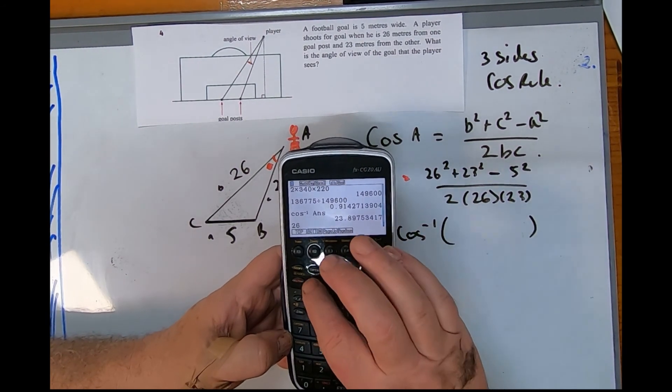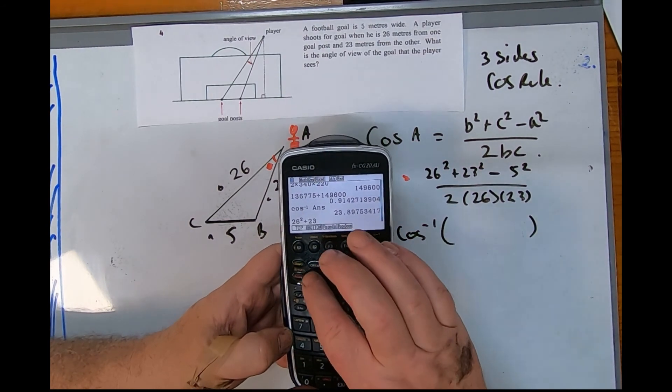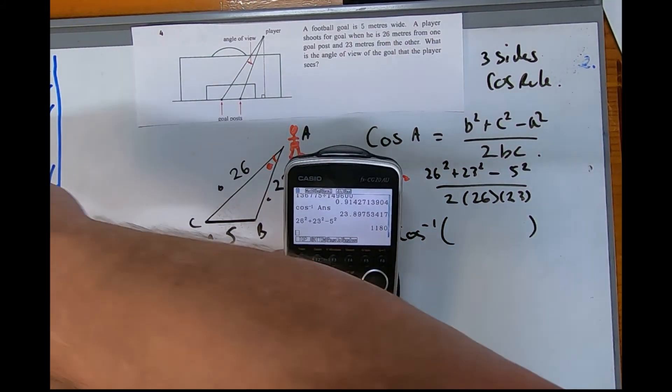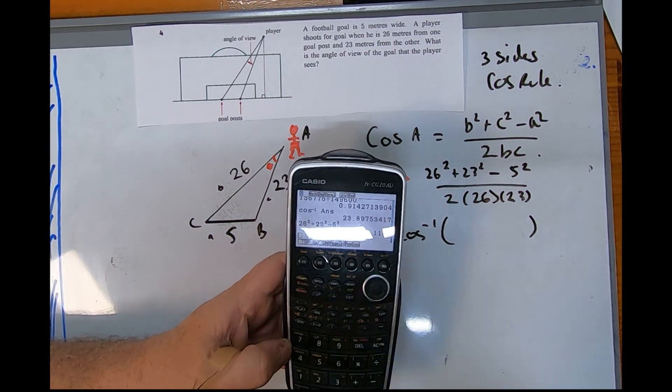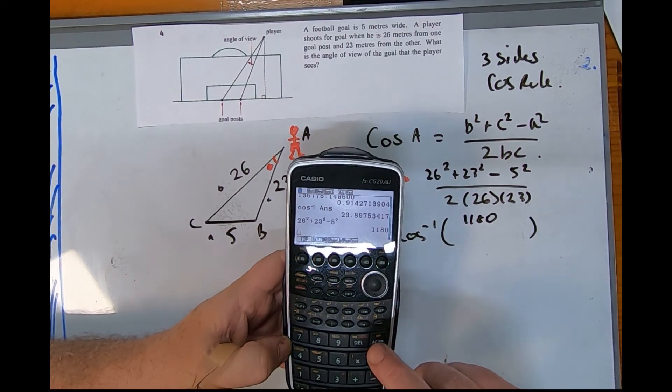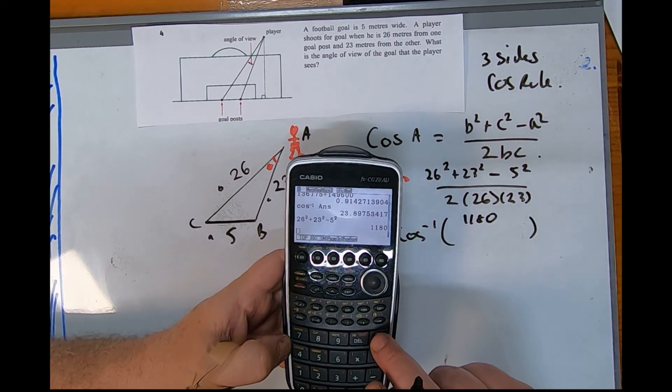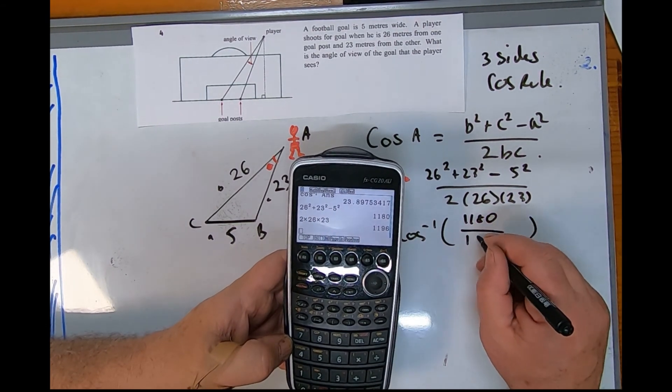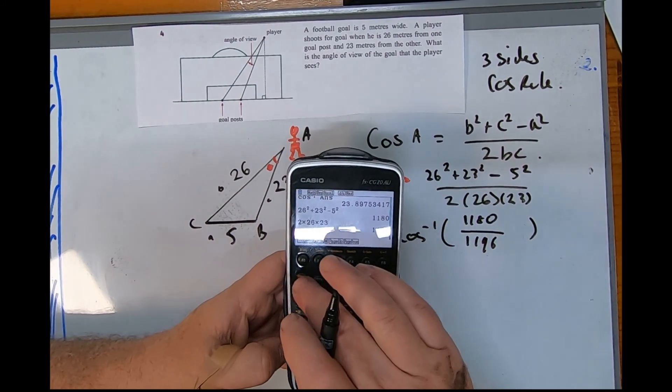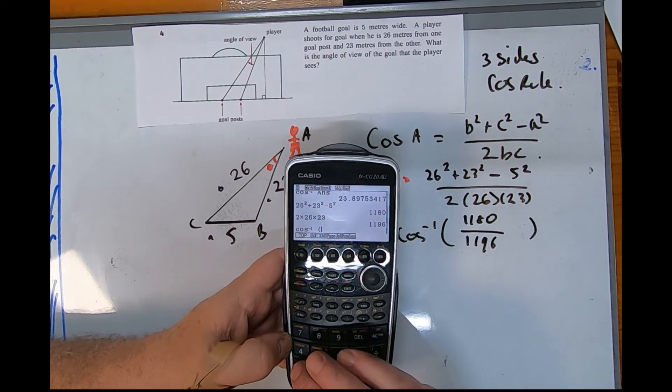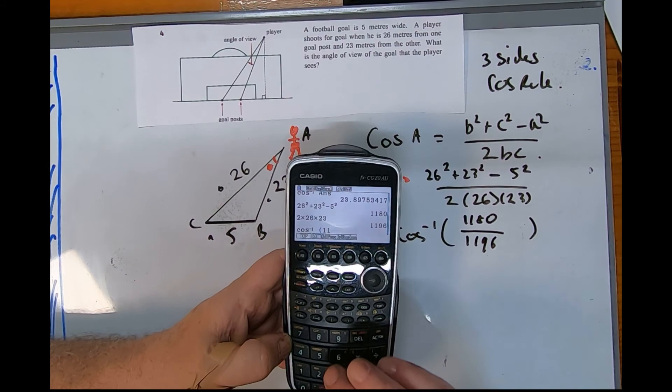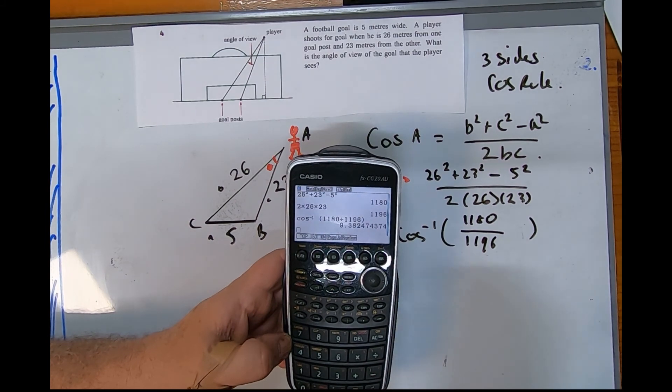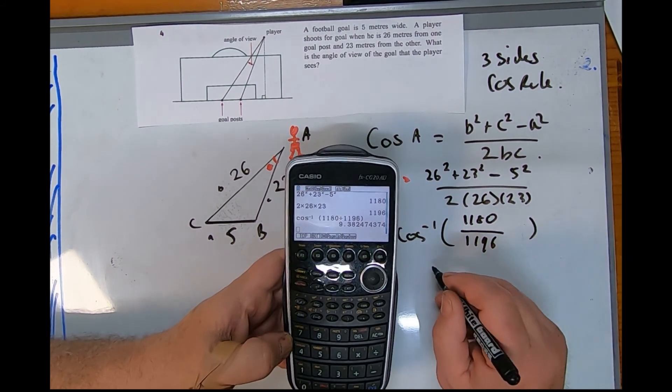26 squared plus 23 squared take 5 squared is 1118. And the bottom line is 2 times 26 times 23, divided by 1196. Shift cos bracket 1118 divided by 1196, and those numbers are literally the same. It's 9 degrees.